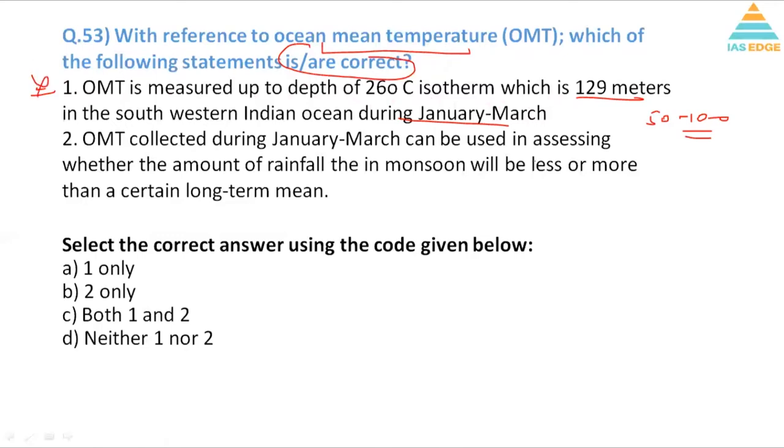OMT collected during January-March can be used in assessing whether the amount of rainfall in the monsoon will be less or more than a certain long-term mean. Yes, predicting monsoon is very important and mean ocean temperature always gives you an idea of what will be the level of intensity of monsoon. So option 2 is correct here and option B is the right answer. If you read GC Leong properly you'll be able to solve this question.